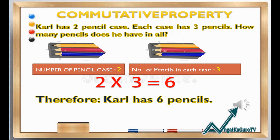Let us now proceed to the commutative property of multiplication. The problem: Carl has two pencil cases and each case has three pencils. How many pencils does he have in all? The number of pencil cases is two, and the number of pencils in each case is three. Two times three equals six. Therefore, Carl has six pencils.